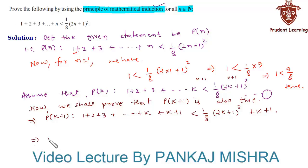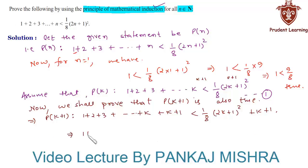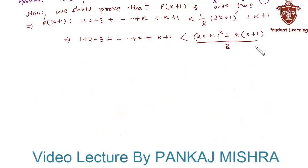This can be written as 1 plus 2 plus 3 and so on up to k plus (k+1) is less than (2k+1)² plus 8 times (k+1), all over 8, where we have taken LCM on the right hand side. Let us call this relation 2.